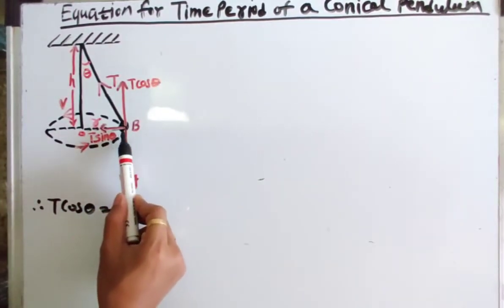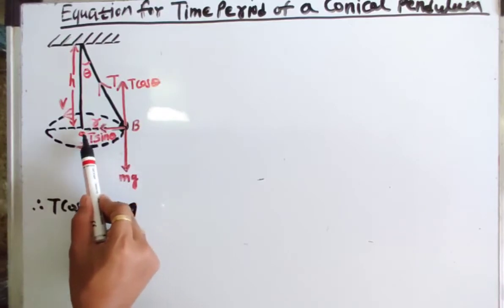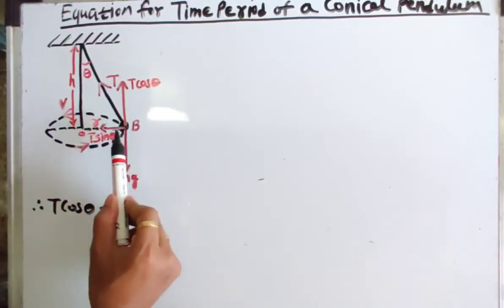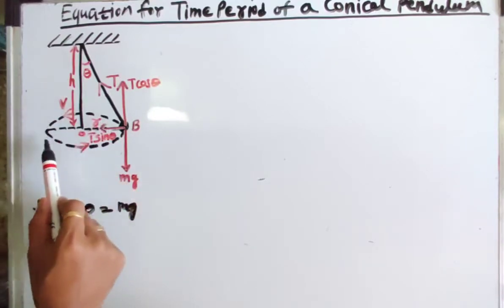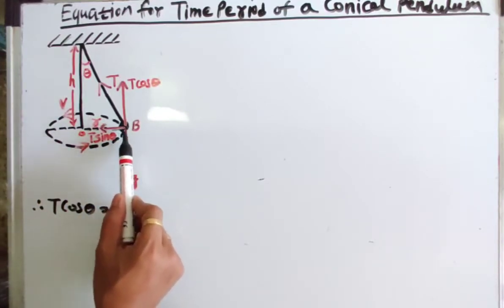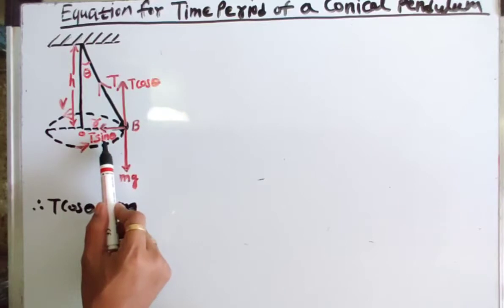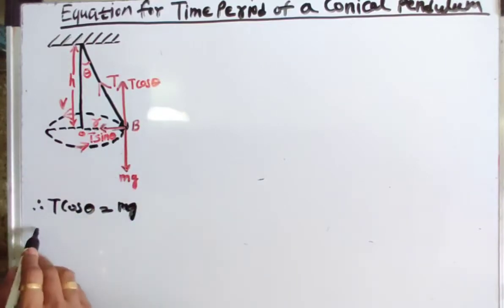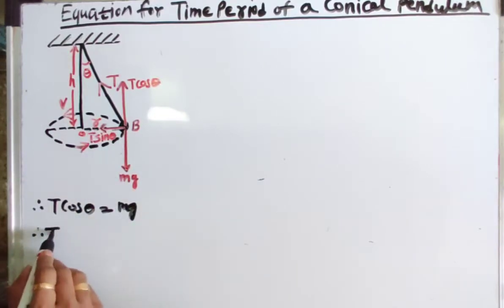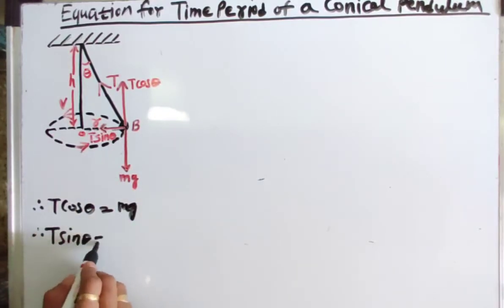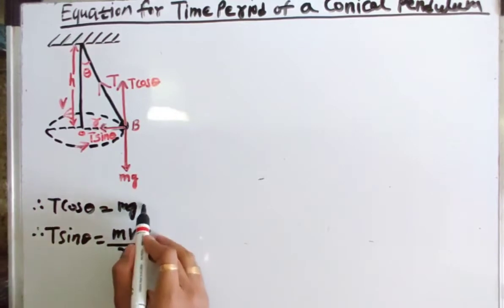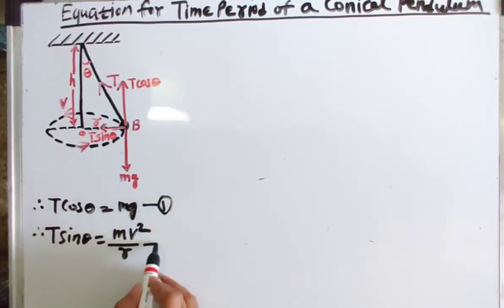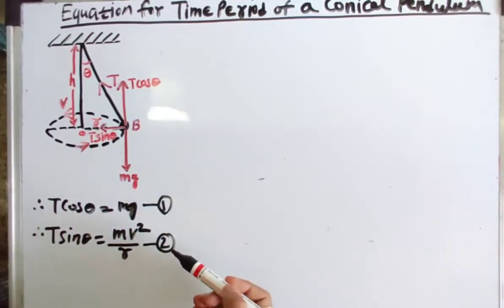The component T sinθ is directed along the radius toward the center of the circular path. So the required centripetal force for the circular motion of the bob is provided by the component T sinθ. Therefore we can write T sinθ = mv²/r. Let this be equation 1 and T cosθ = mg equation 2.